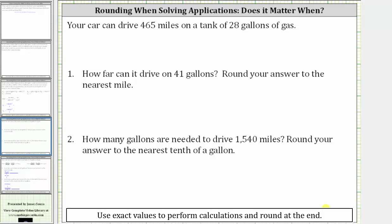For this problem, your car can drive 465 miles on a tank of 28 gallons of gas. Number one: how far can it drive on 41 gallons? Round the answer to the nearest mile. Number two: how many gallons are needed to drive 1,540 miles? Round the answer to the nearest tenth of a gallon.